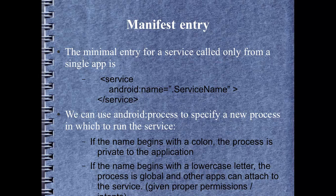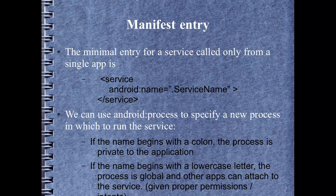There is a manifest entry for services. The minimal entry is the service tag with the Android:name attribute set to the name of the class with a dot in front of it — the same as setting up an activity manifest entry, but using the service tag instead of the activity tag. We can also use Android:process to specify a process in which the service should run. If the Android:process attribute name begins with a colon, the process is private to our application. If it begins with a lowercase letter, we're specifying a process that can be global — possibly in another app — and this tells that process that the service is runnable if the other application has the proper permissions and intents.